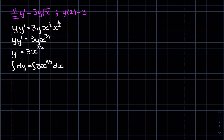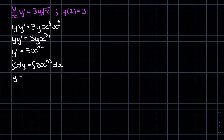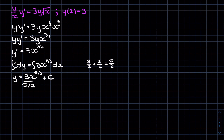We can imagine there is a 1 here, so that gives us y equals 3x — remember when we're doing integration we're upping the power by 1, so if we have 3/2 it's the same as adding 2/2, giving us 5/2. So we write x to the 5/2 over 5/2 plus our constant of integration. We can rewrite this as y(x) equals 6x to the 5/2 over 5 plus c, and we're done.